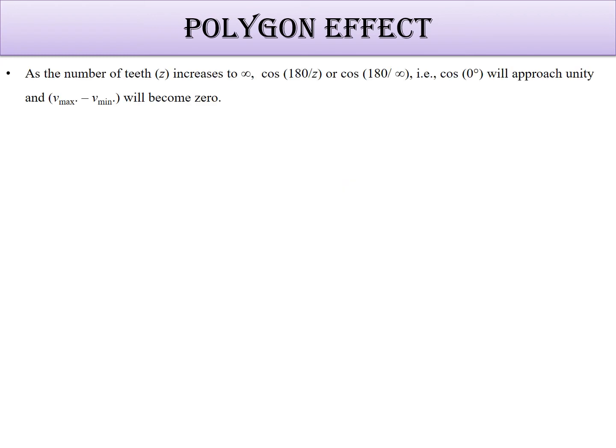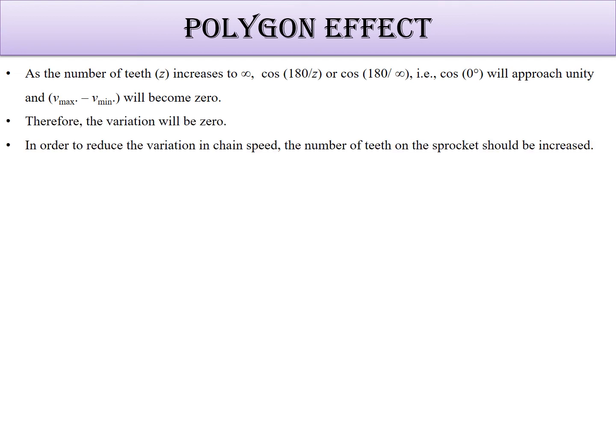If z is increased to infinity, cos(180°/∞) becomes cos(0°) which equals 1. That means V_max minus V_min approaches zero — no velocity variation. So a maximum number of teeth on the sprocket gives a smoother and more consistent speed ratio and operation.